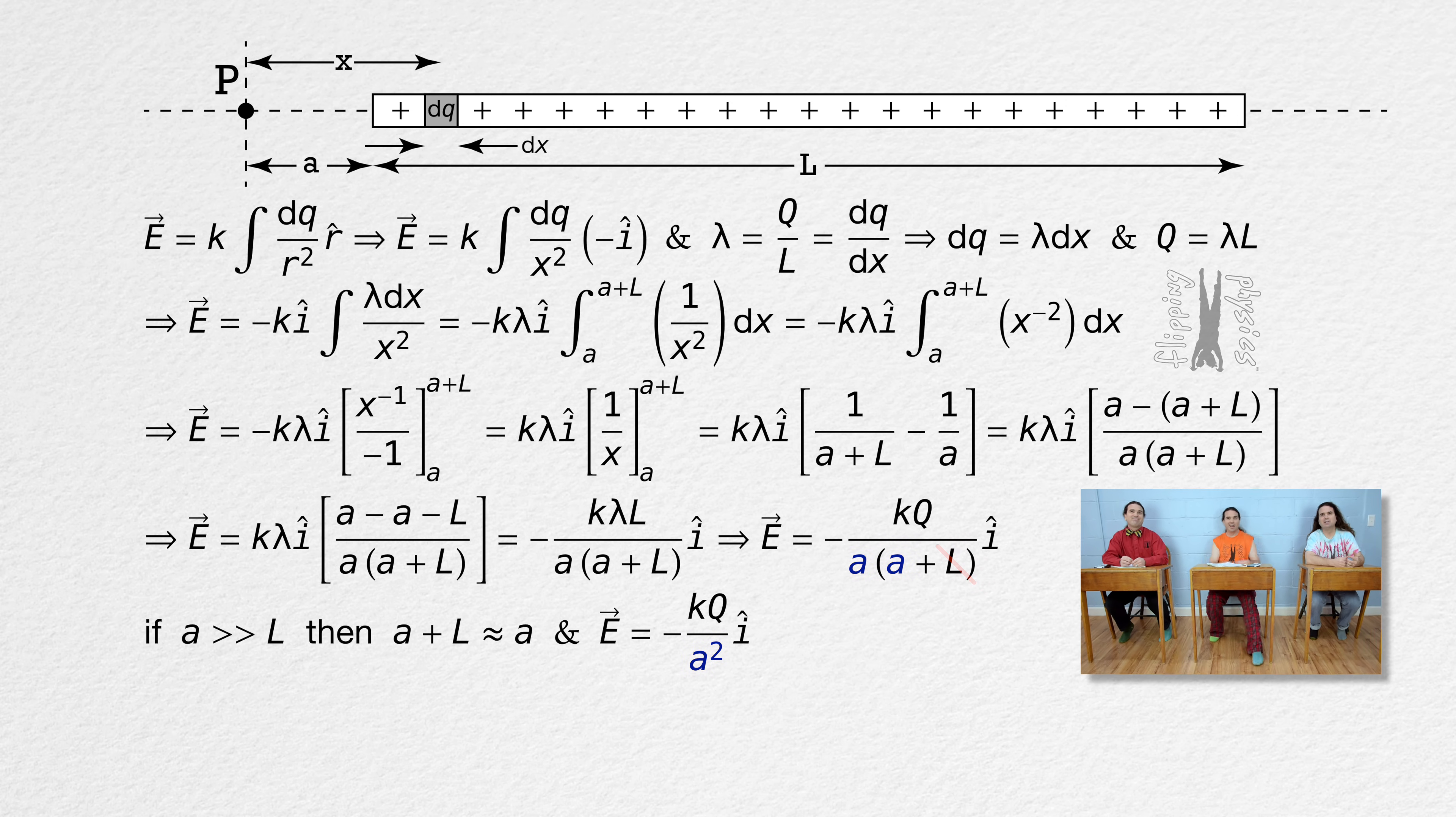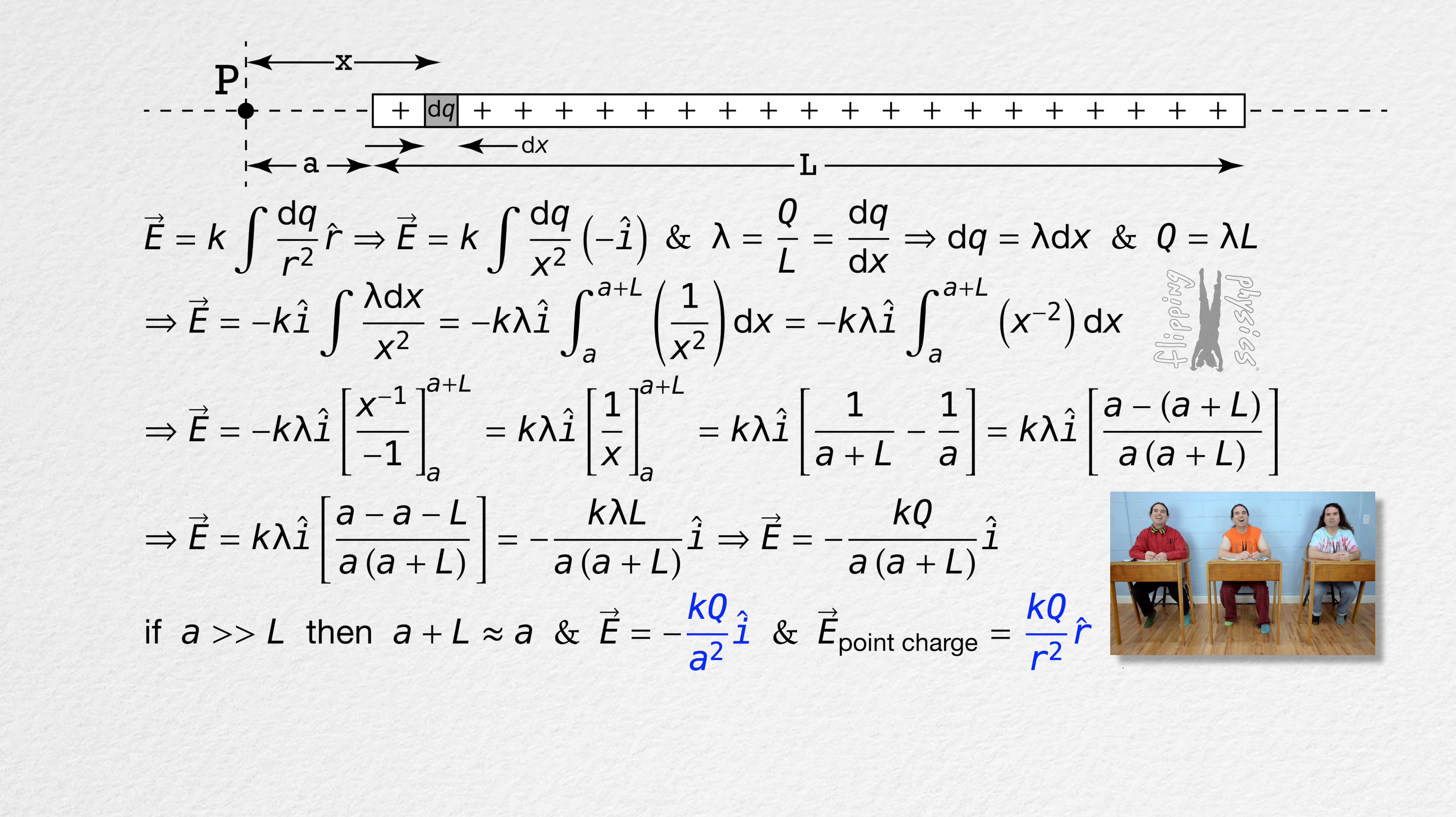Right, I can see that now. It is the same equation I derived at the beginning for the electric field caused by a point charge. That is pretty cool. Yeah, that was fun. Can we find the electric field caused by another continuous charge distribution, Mr. Pete, please?